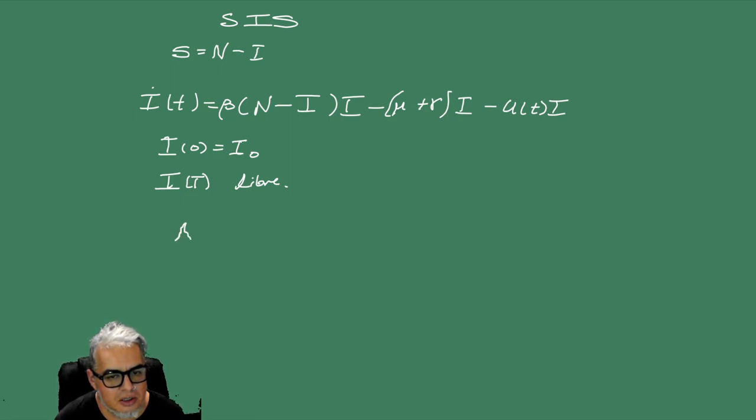Entonces, ¿cómo planteamos el problema de control? Hay que plantear el conjunto admisible de controles. Este va a ser U de t de clase L1 en el cero T, tal es que es positiva y es menor que alguna cota. Esta es una constante positiva.